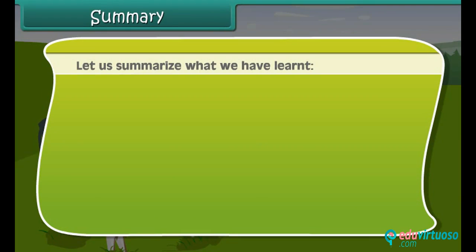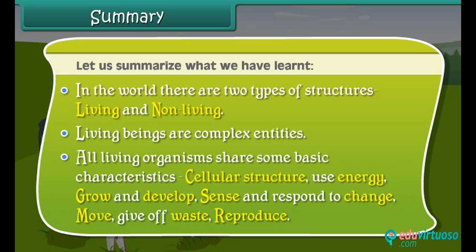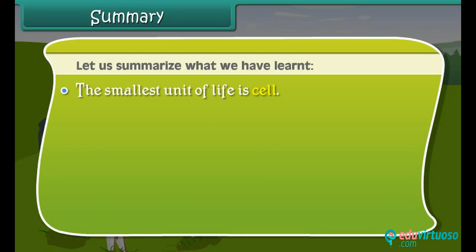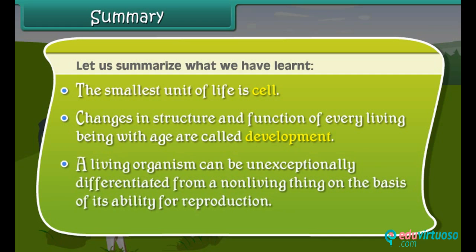In summary, there are two types of structures in the world: living and non-living. Living beings are complex entities. All living organisms share basic characteristics: cellular structure, use of energy, growth and development, ability to sense and respond to change, movement, giving off waste, and reproduction. The smallest unit of life is the cell. Changes in structure and function of every living being with age are called development. A living organism can be unequivocally differentiated from a non-living thing on the basis of its ability for reproduction.